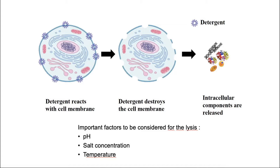The choice of detergent for cell lysis also depends on sample type. Animal cells, bacteria, and yeast all have different requirements for optimal lysis due to the presence or absence of a cell wall. Because of the dense and complex nature of animal tissues, they require both detergent and mechanical lysis. In addition to the choice of detergent, other important considerations for optimal cell lysis include the buffer, pH, salt concentration, and temperature.